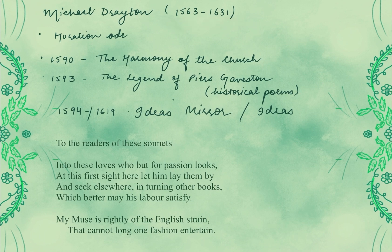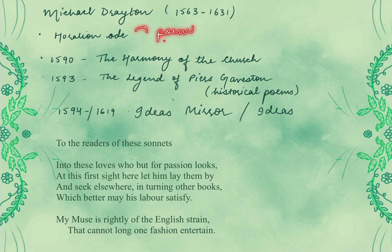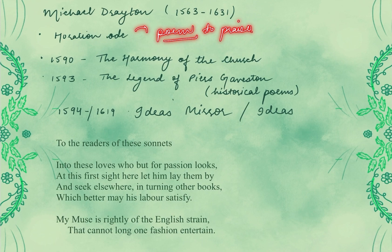Now let's go to the first important point: Horatian Ode. Let's break it down. An ode is a specific kind of poem — a poem written to praise. To praise a person, or probably to praise an object, an event — literally anything. The keyword is 'praise.' What is being praised is not that important; what matters is that you are praising something.